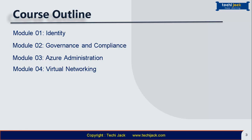The fifth one is Inter-site Connectivity. In this module you will learn how you can connect your on-premises network to Azure with a VPN Gateway, or with the Microsoft global network by using ExpressRoute.